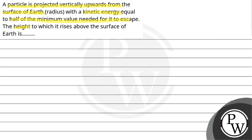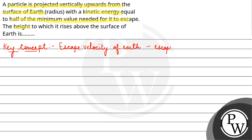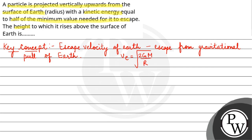So here our key concept is escape velocity of earth. Escape velocity is the minimum velocity which is required to escape from the gravitational pull of earth. This expression is: minimum velocity equals under root of 2GM upon R, where G is the gravitational constant, M is the mass of earth and R is the radius of the earth.